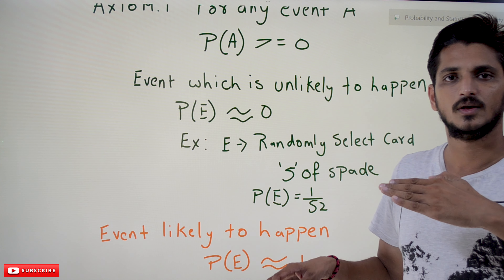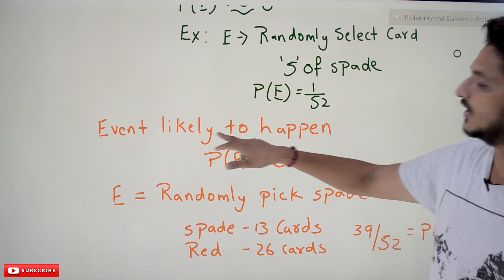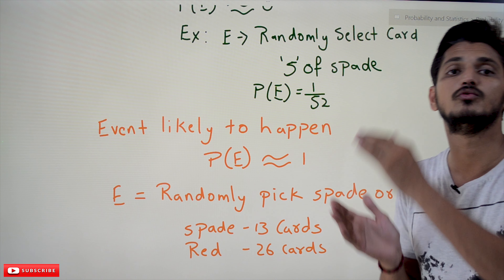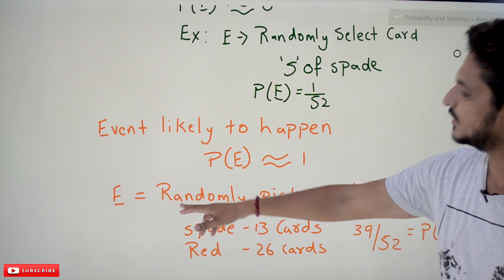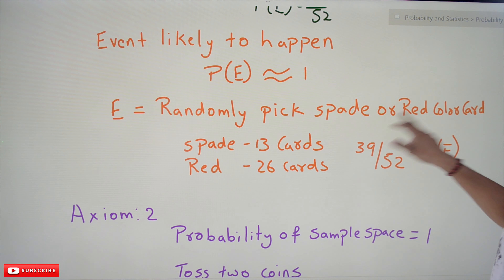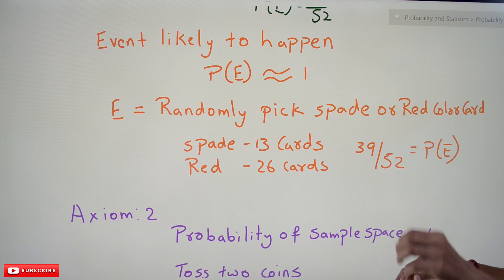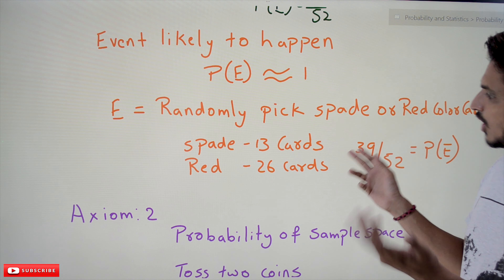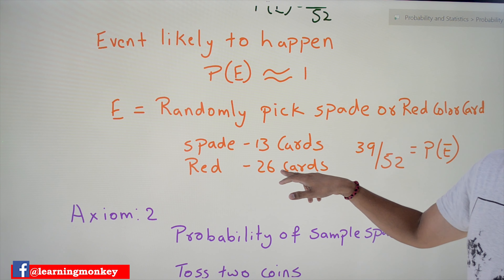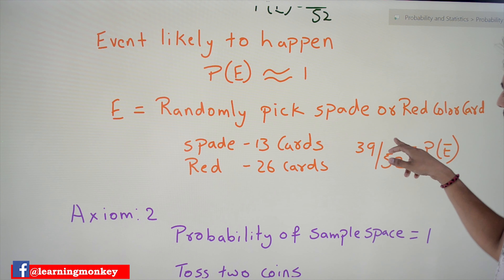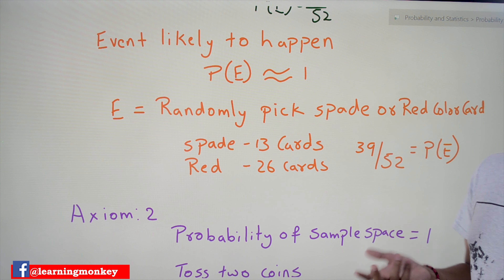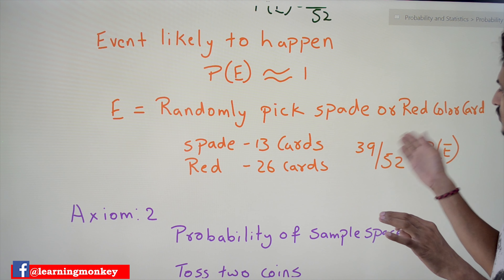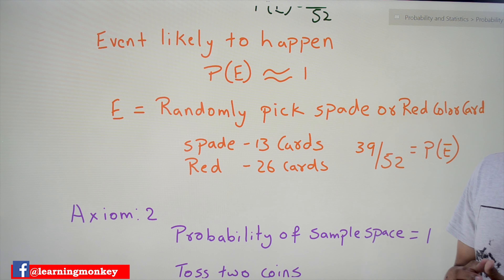If you take an event that is very likely to happen, then the probability value is almost near to 1. For example, randomly pick a card that is either a spade or a red color card. There are 13 spade cards and 26 red color cards, so 39 out of 52 — that is very likely to happen. The probability value is almost near to 1, so probability always lies between 0 and 1.